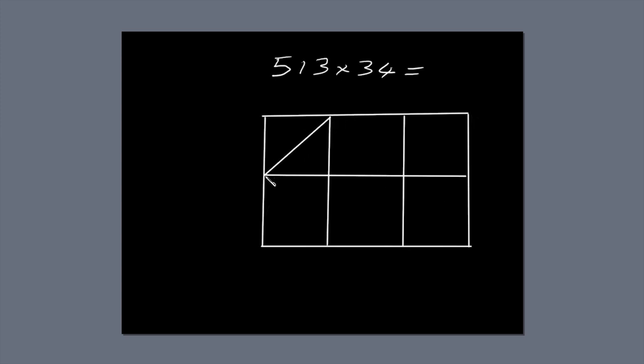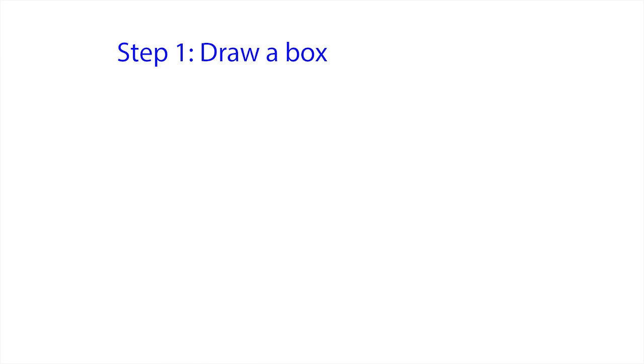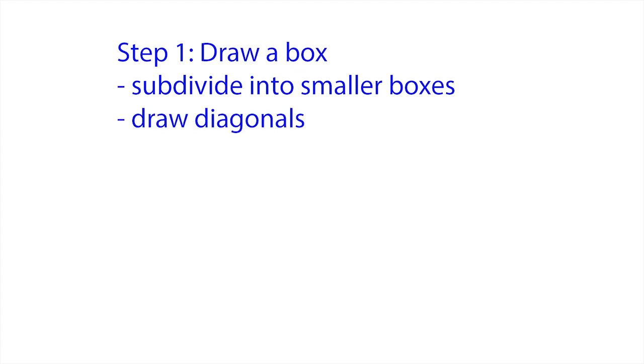Next, draw a diagonal line through each of the six small boxes. You might find you can draw a diagonal through more than one of the smaller boxes at a time. That's step one. Draw a box, subdivide it into smaller boxes and draw diagonals through them.